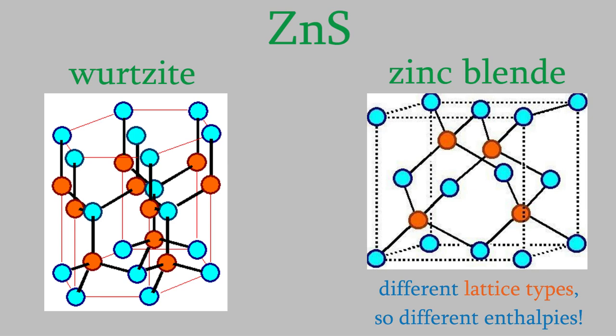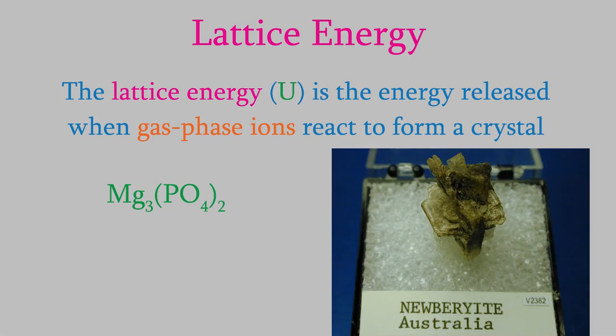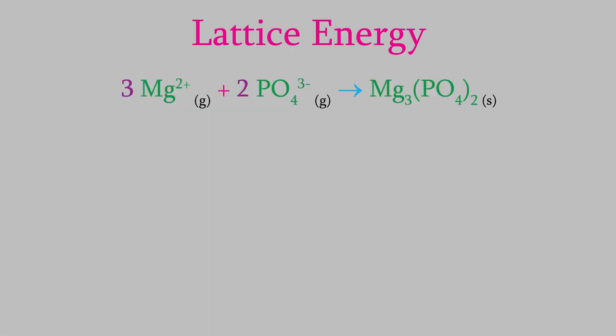So what do we do instead? Instead of the bond enthalpy, we usually measure the thermodynamic stability of an ionic crystal using what's called the lattice energy, which we symbolize as the capital letter U. The lattice energy is the enthalpy of the reaction in which gas phase ions react to form a crystal. For example, suppose we have a crystal of the ionic compound magnesium phosphate, which occurs in the mineral Newberyite, where it has an orthorhombic crystal lattice. We can imagine starting with the gas phase ions of magnesium and phosphate and combining them to form the solid crystal. The enthalpy of this reaction would be the lattice energy.